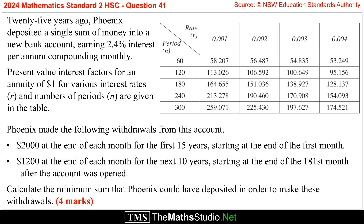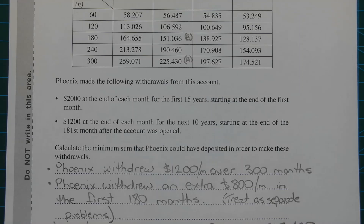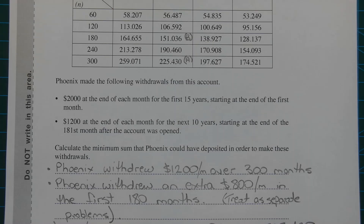Calculate the minimum sum that Phoenix could have deposited in order to make these withdrawals. One way to solve this problem is to assume Phoenix made two withdrawals in the first 180 months: a withdrawal of $1,200 per month plus an extra $800 per month, which gives us $2,000 per month in the first 180 months — equivalent to the first 15 years.